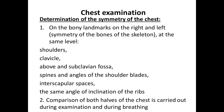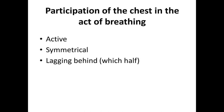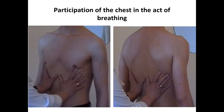Next, determine the symmetry of the chest using bony landmarks: shoulders, clavicles, supraclavicular fossae, spines, and angles of shoulder blades — the interscapular spaces should be the same, and angles of ribs should be compared. Comparison of both halves of the chest is carried out during examination and during breathing. You should also assess the participation of the chest in the act of breathing — normally it should be active and symmetrical. In any pathological process, one half of the chest may lag behind during breathing, and you should identify which half.